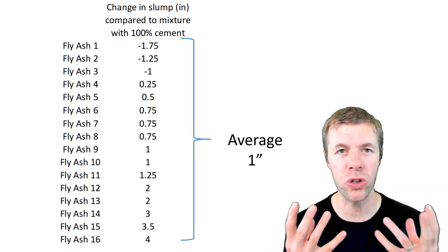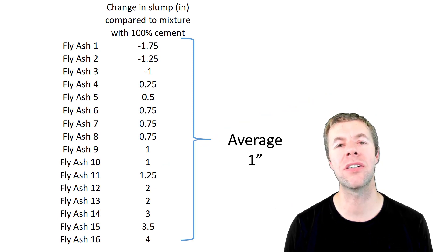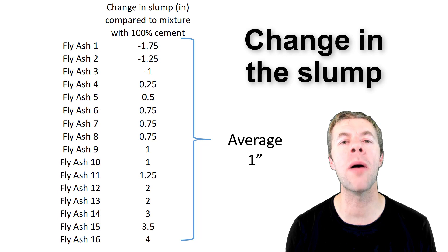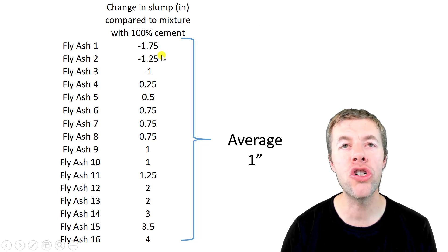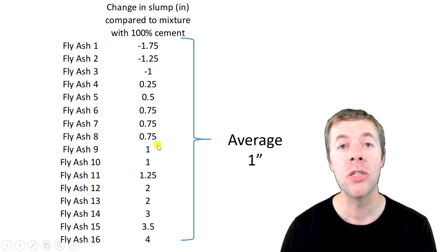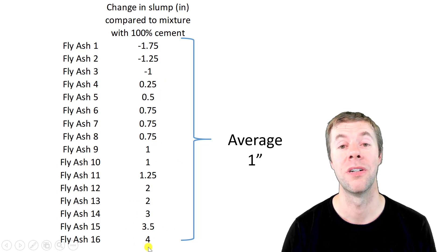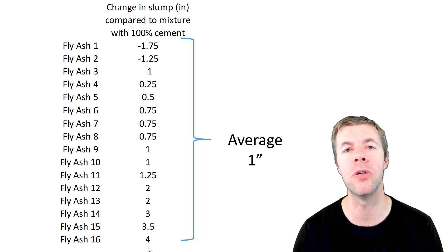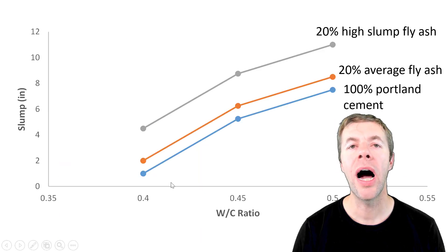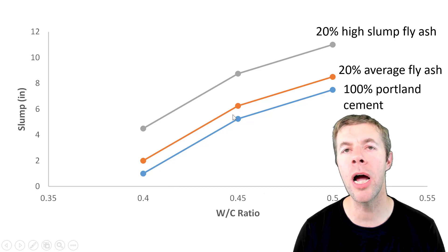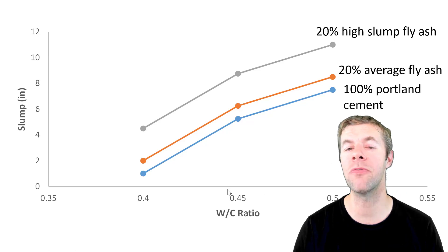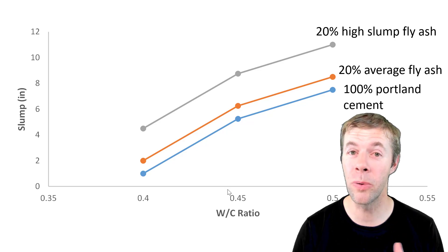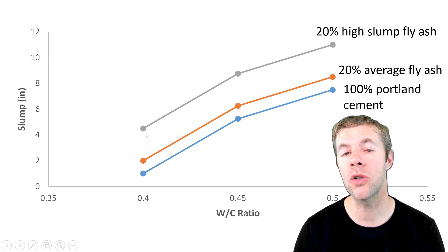These are all mixtures we did in our lab using 16 different fly ashes at a 20% replacement by mass of the cement. What I'm showing you is the change in slump that happened. Some of these fly ashes actually reduced the slump, some didn't change it by much, and some increased it a lot. Not all fly ash is the same — it's not just about the shape of the particles, it's also about the size distribution. On average, a typical fly ash would increase slump by about one inch. But if you used one of these special high-slump fly ashes with just the right particle distribution for your cement — it's not always practical, but it is possible — you can jump your slump up quite a bit.